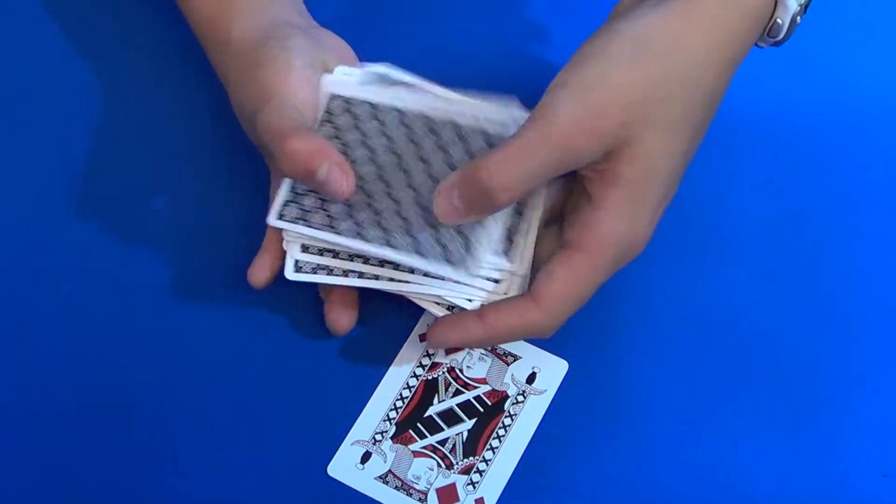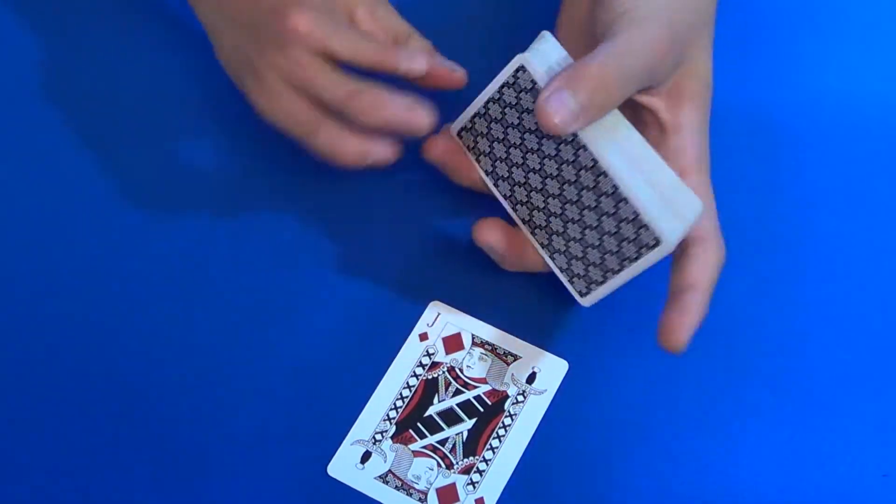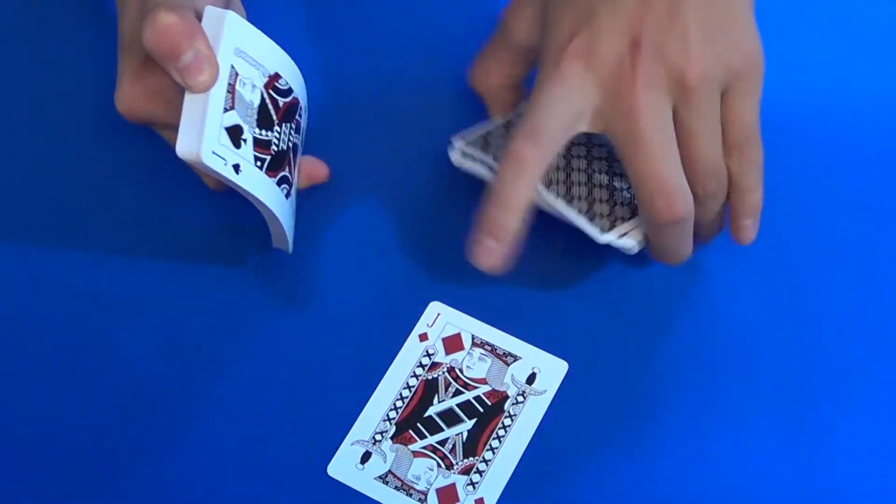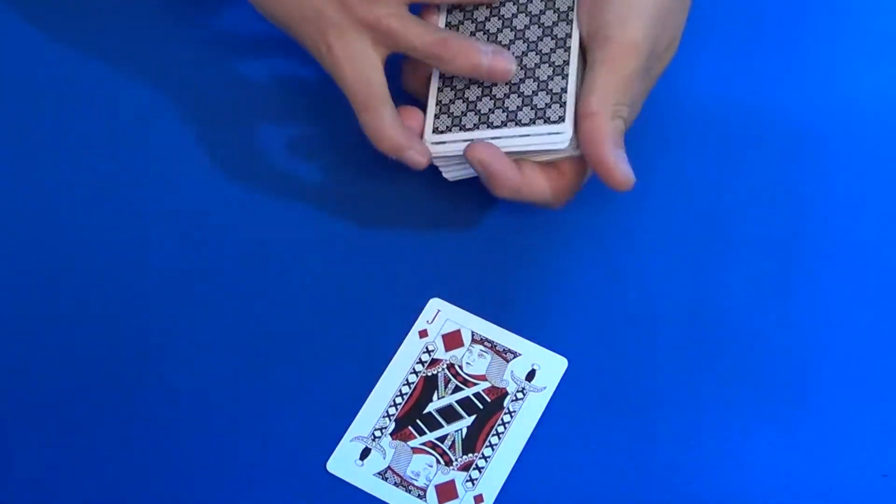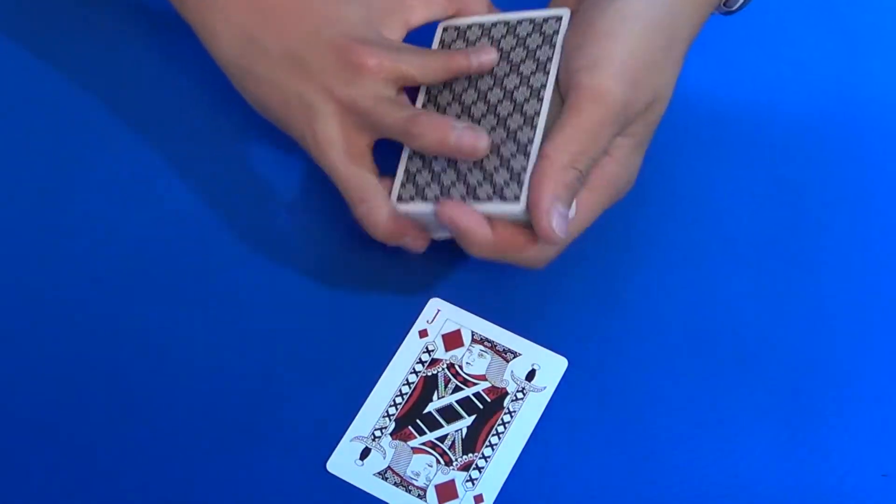You need to do something like this, so you're pointing it towards yourself and then you're doing it. Alright, and then you can do the shuffle. So again, you can just do another one. I just did it there. It doesn't really matter because I'm just showing you guys, but you get the idea. Control it to the bottom.